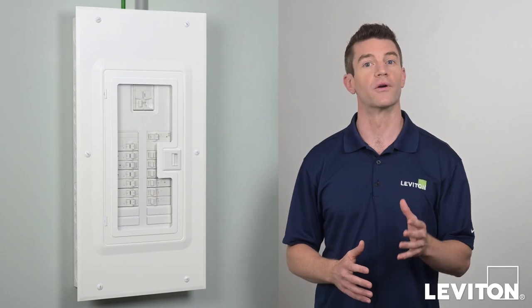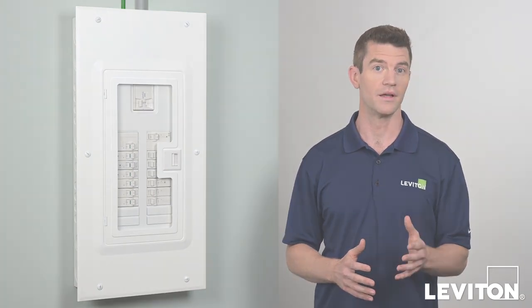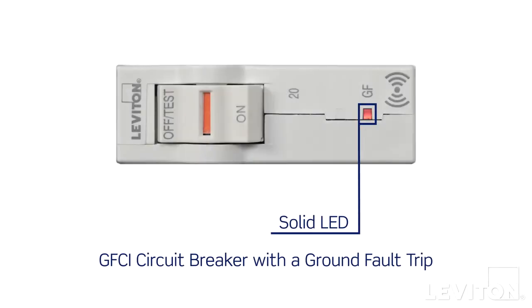If the ground fault breaker experiences a ground fault trip, the GF window will light up with a solid LED. If the reason for the ground fault isn't obvious, call an electrician.